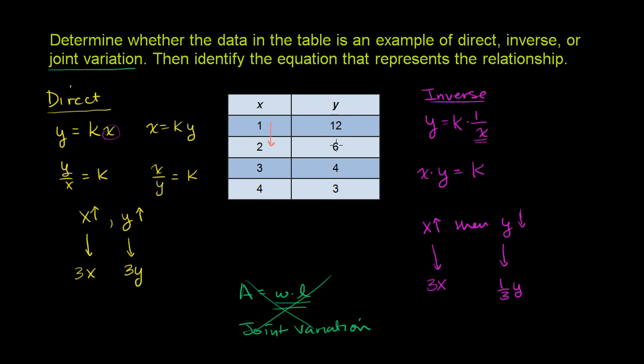So as x is increasing, as x goes from 1 to 2, what is happening to y? y is going from 12 to 6. So as x is going up by a factor of 2, y is going by a factor of 1/2, or y is being multiplied by 1/2. As x goes from 1 to 3, being multiplied by 3, y is being multiplied, or I guess you could say, is multiplied by 1/3.